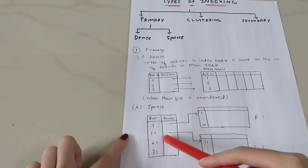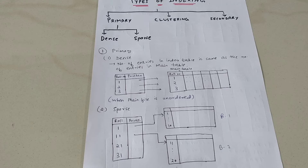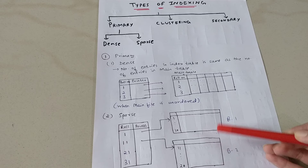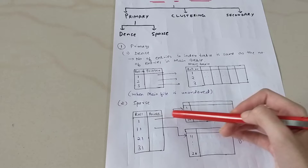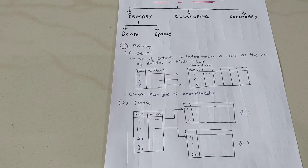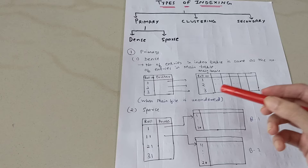In sparse indexing, the index table does not have the same number of rows as the main table. Your main table will be divided into blocks — block one, block two, and so on. Rows one to ten go into block one, eleven to twenty into block two, and so on. In the index table, only the first row from each block is stored: one, eleven, twenty-one, thirty-one, and so on. If we ask for record number fifteen, the index table needs to find it.